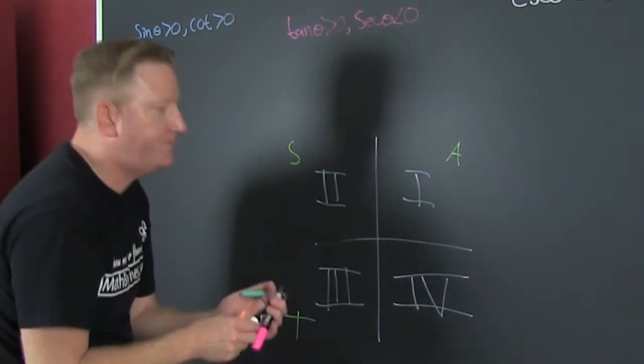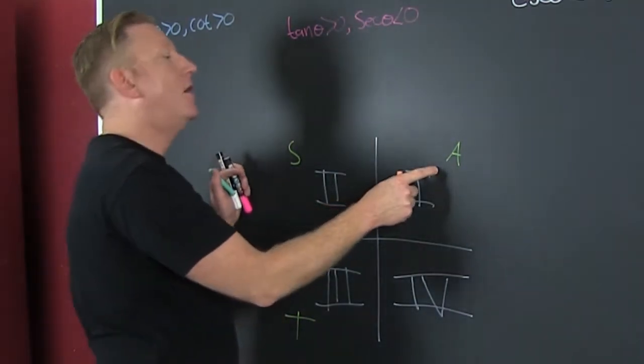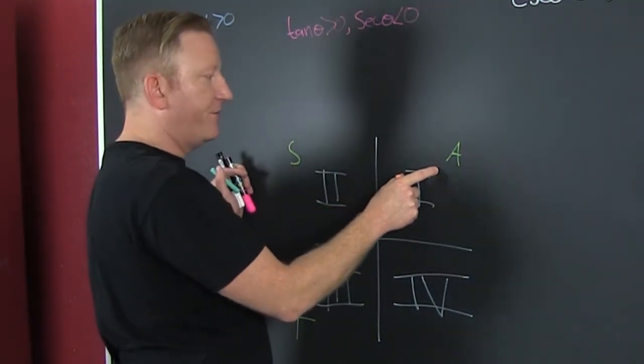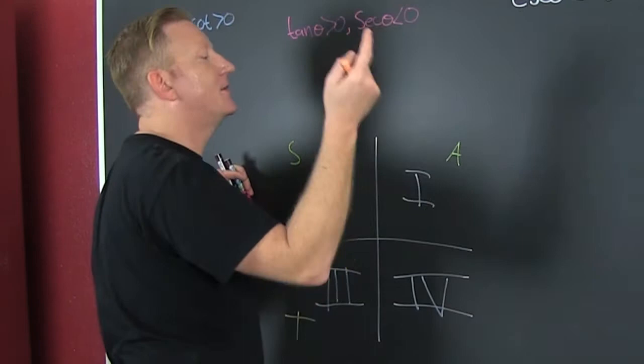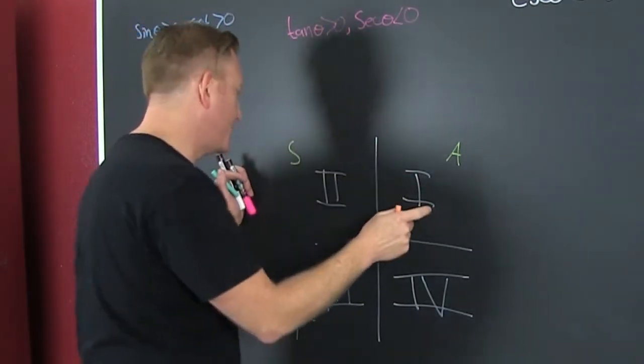So when they say 'all,' they're all positive in the first quadrant. I'm talking about the big three: the sine, the cosine, the tangent.